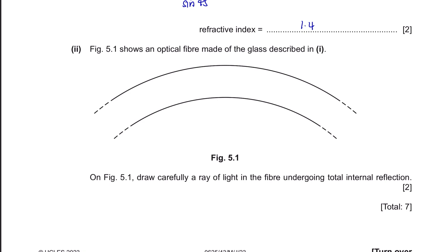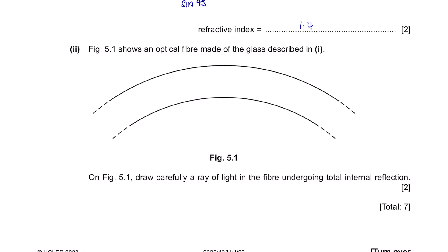Question 2, Part 2. Figure 5.1 shows an optical fiber made of the glass described in part 1. On figure 5.1, draw carefully a ray of light in the fiber undergoing total internal reflection. Firstly, draw a ray that enters the optical fiber until it touches the glass. And your first reflected ray will look like this. Make sure that the angle of incidence is roughly equal to the angle of reflection. This ray now can be extended to the end of the fiber.